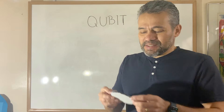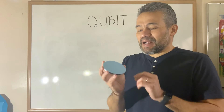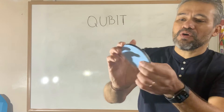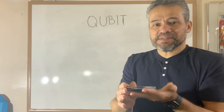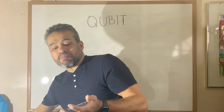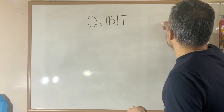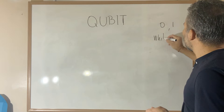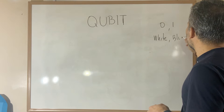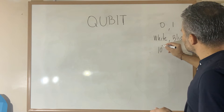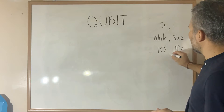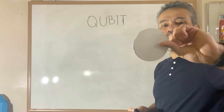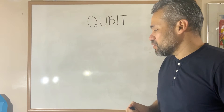Let's start with the notion of a bit. A bit is something that can have two outputs, either white or blue, like zero or one. This is a bit and the possible states for a bit are zero and one — or let's say white and blue — written like this. These are the possible states for a bit. It's like a coin; it has only two outputs.